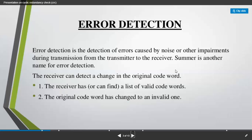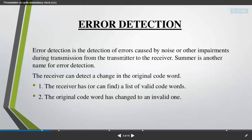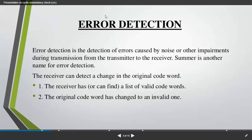Error detection is nothing but detecting errors caused by noise or any other impairments whenever you are transferring data from one host to another host. Maybe due to some network issues or other problems, the data packets may not reach the destination site. At that time you need to find out if any error is there, remove the errors, and send the original data packets.